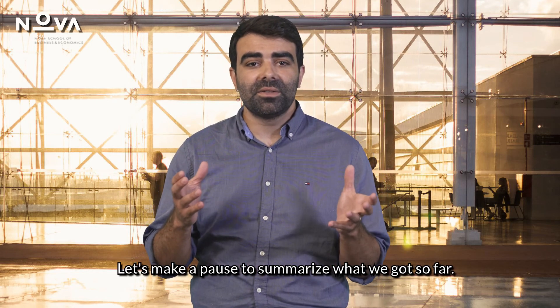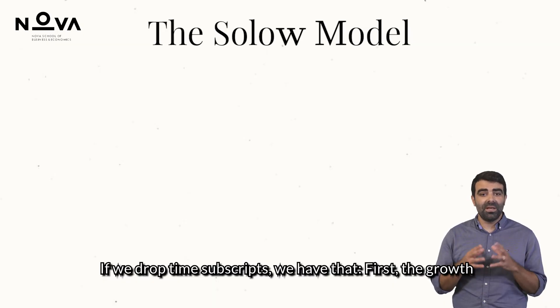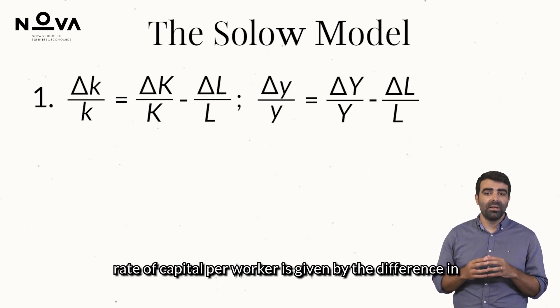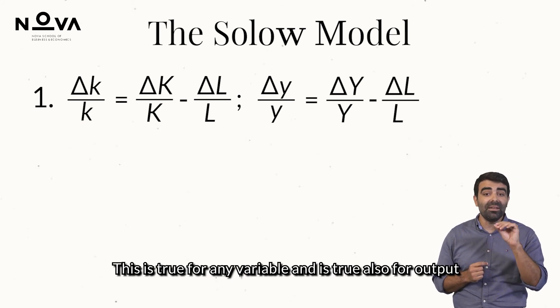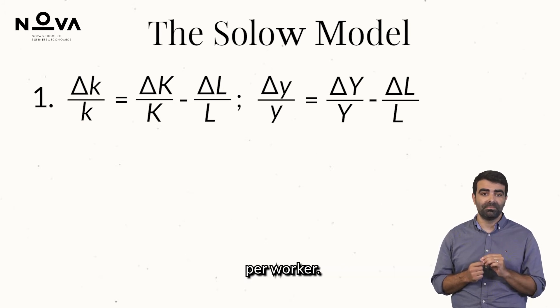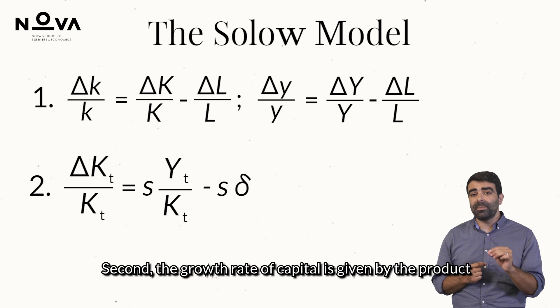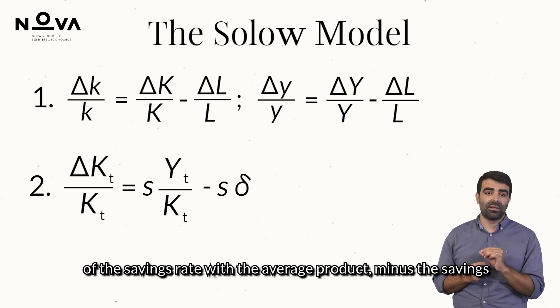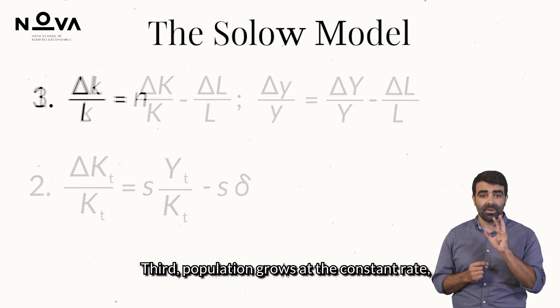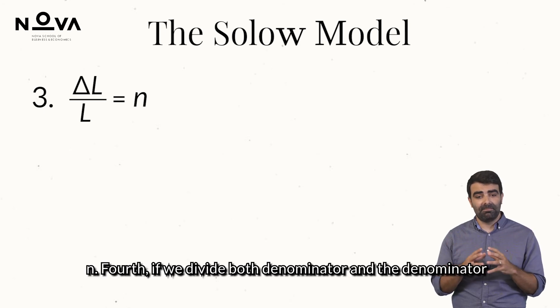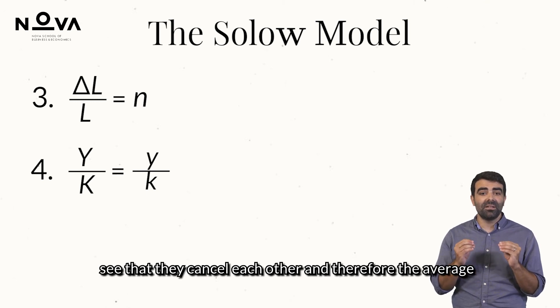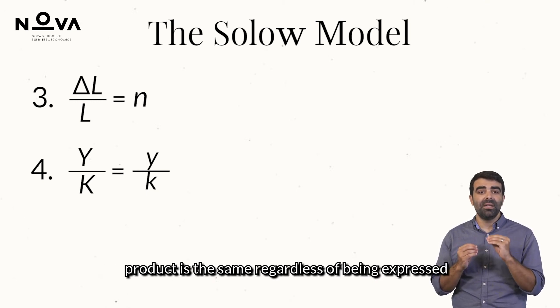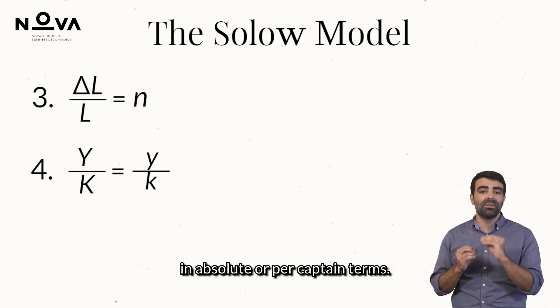Let's make a pause to summarize what we got so far. If we drop time subscripts, we have that first, the growth rate of capital per worker is given by the difference in growth rates between the capital stock and population. This is true for any variable and is true also for output per worker. Second, the growth rate of capital is given by the product of the savings rate with the average product minus the savings rate times depreciation. Third, population grows at the constant rate n. Fourth, if we divide both the numerator and the denominator of the average product by the size of the population, we see that they cancel each other and therefore the average product is the same regardless of being expressed in absolute or per capita terms.